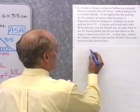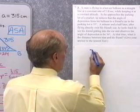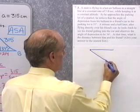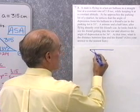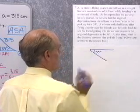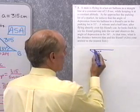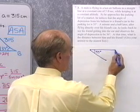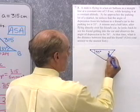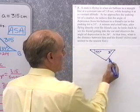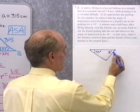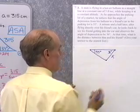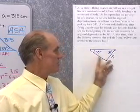We'll draw a triangle describing the situation. The hot air balloon is traveling in a straight line. At one point he looks down and sees the angle of depression to the car is 35 degrees. He flies directly over the car to another point and looks back, seeing the angle of depression is now 36 degrees. We want to find the distance x between the balloon and the car at that second point.